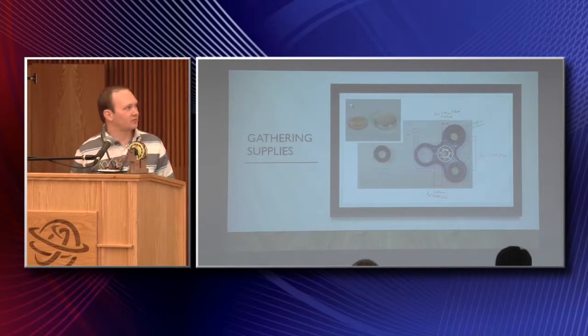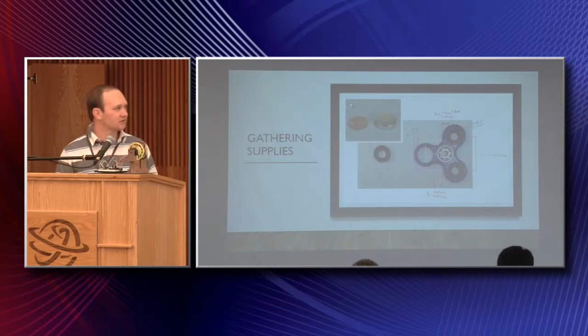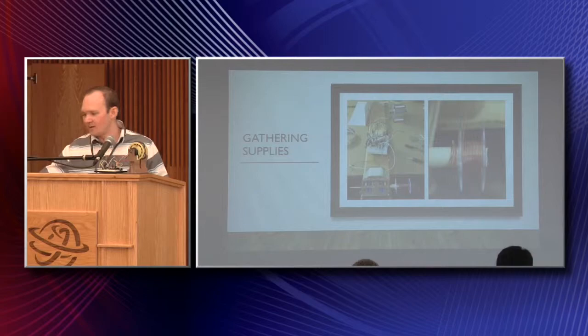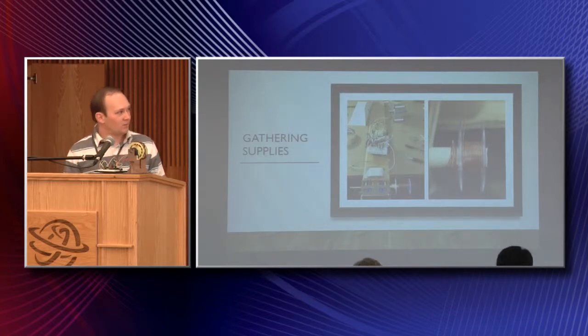So I started gathering supplies. I figured out what type of magnets I wanted. These magnets are 19 pound magnets that hold 19 pounds against a steel wall. Crazy strong. And then I just had a normal fidget spinner. I had to wind my own copper coils. So I've got a sewing bobbin that I just filled with copper wire.